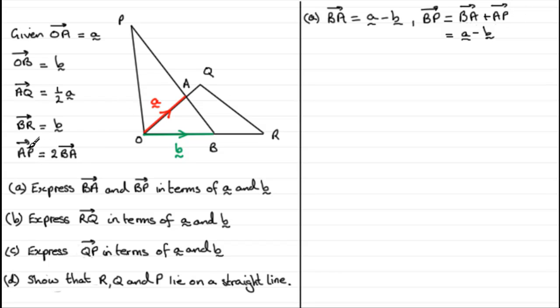Well we're told that AP is twice BA. So AP is twice it. So we've got twice BA. We can just double this so we can say 2a minus 2b. So we just need to group these together. So we've got a plus 2a which is 3a, and minus b minus another 2b is minus 3b.